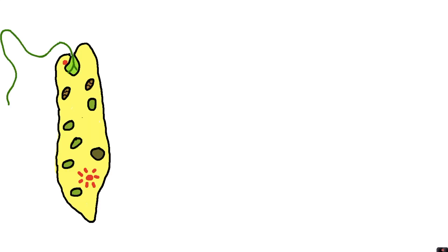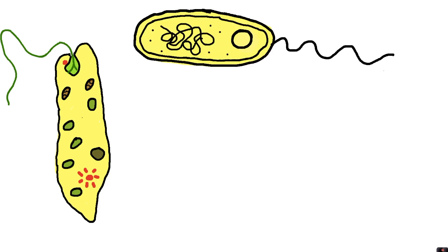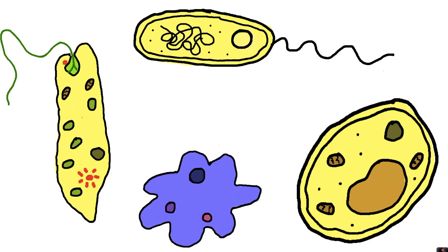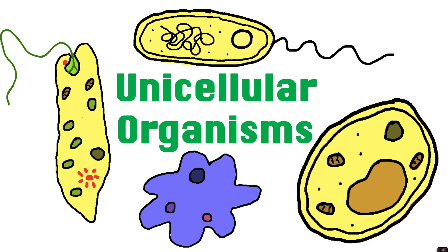There are also many living organisms that exist as a single cell. These are referred to as either single-celled organisms or unicellular organisms, and as they are single cells we cannot see them with our eyes and we would need a microscope to see them. In this video we are going to look at four different examples of unicellular organisms.